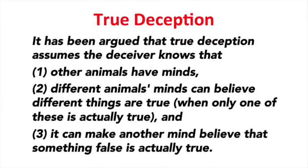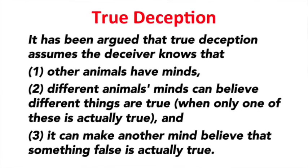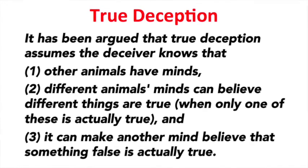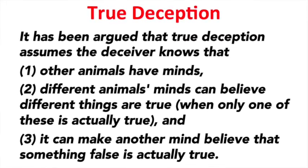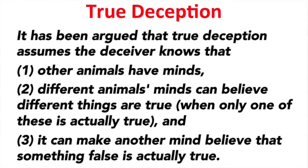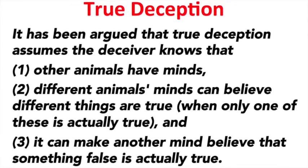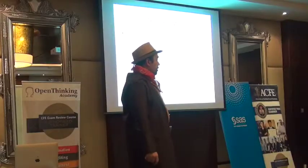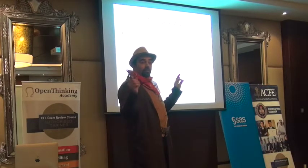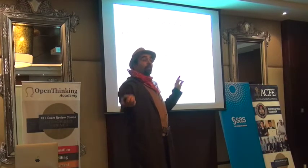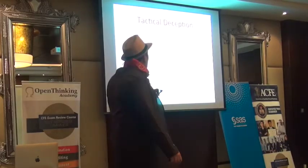True deception requires three things. Number one: you need to know that other animals have minds — that other animals can think. Number two: you know that different animals have different ways of thinking. Number three: animals understand how they can manipulate the thinking of others. We call that tactical deception.